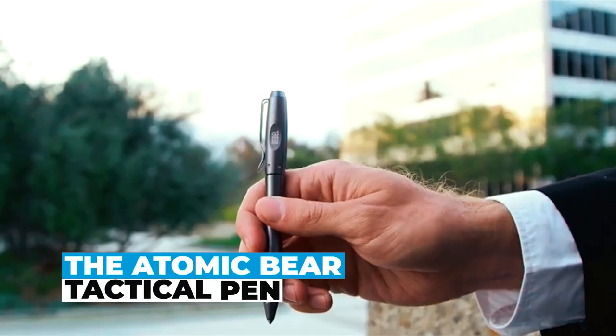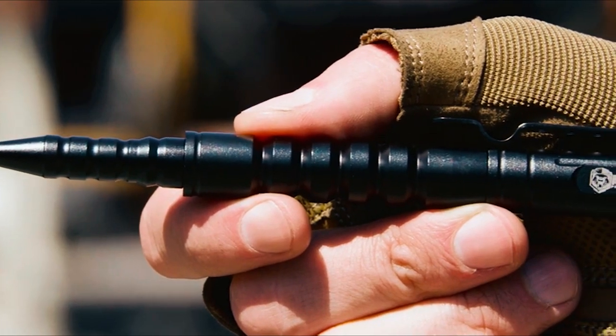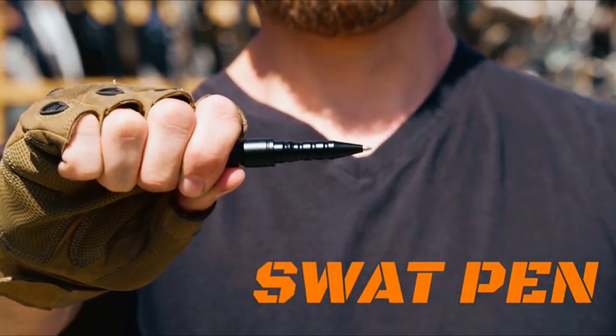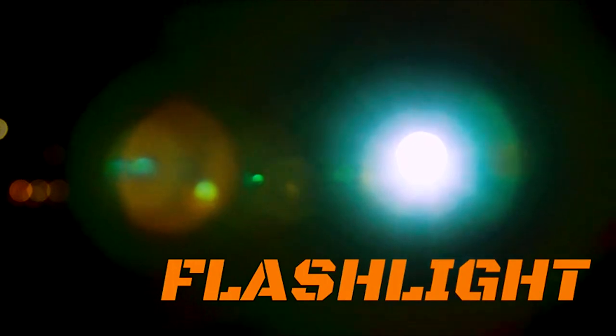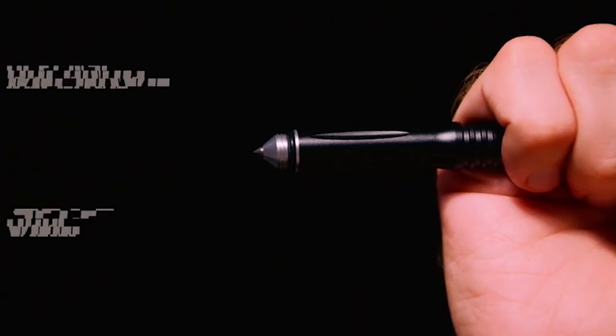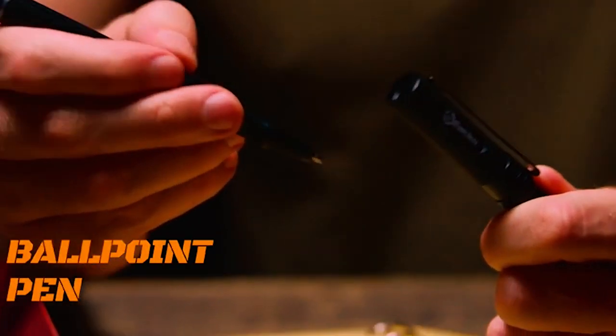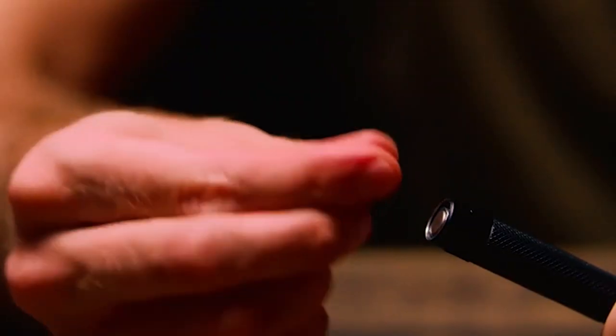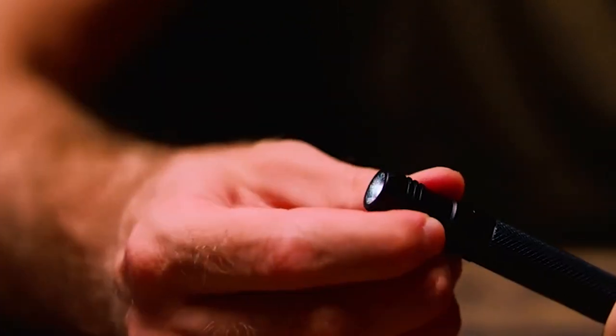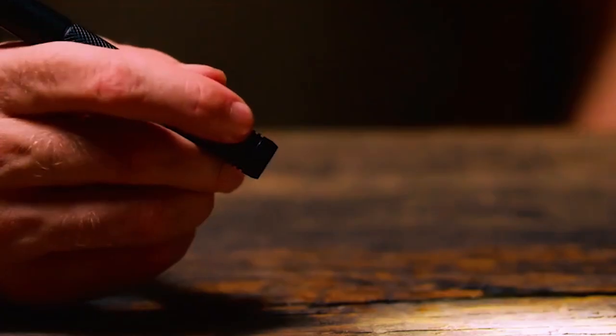The Atomic Bear Tactical Pen. The Atomic Bear Tactical Pen is a versatile and reliable tool that combines the functions of a tactical pen, flashlight, and multi-tool. This well-designed pen not only writes smoothly but also serves as a self-defense tool with its tungsten carbide glass breaker, capable of breaking car windows in emergencies. The added LED flashlight is powerful and offers two modes for various situations.